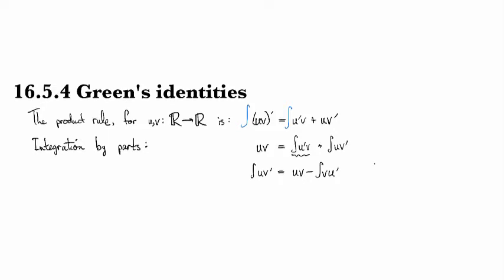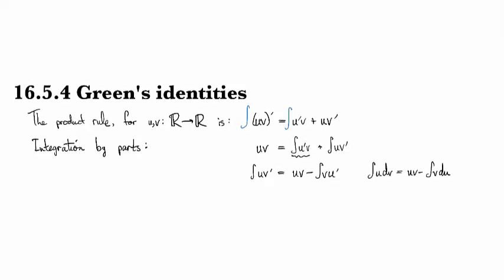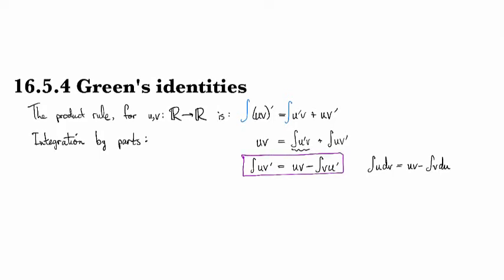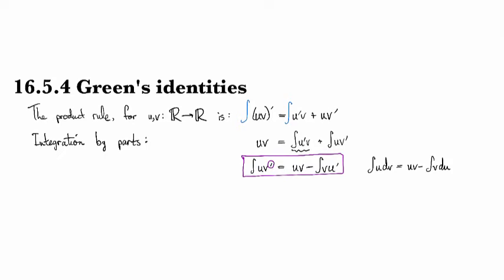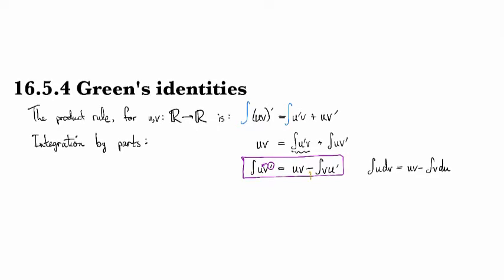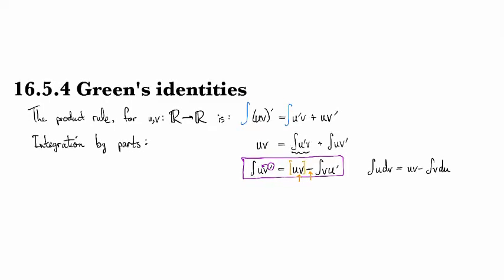Or as it's more commonly denoted, integral of u dv is equal to uv minus integral v du. But it's handy to think about it in this form right here. Because what it tells you is that if you have a derivative in part of the integrand, you can move it onto the other part. And all you have to pay is a minus sign and a boundary term.